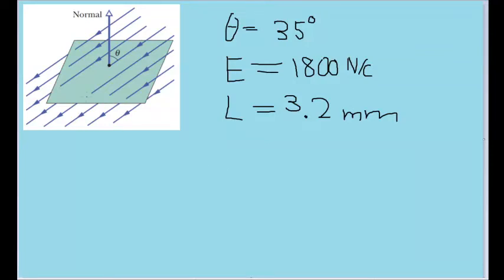In this problem, we are given a square surface with a side length of 3.2 millimeters, an electric field, a uniform electric field vector with a magnitude of 1,800 newtons per coulomb passing through it.